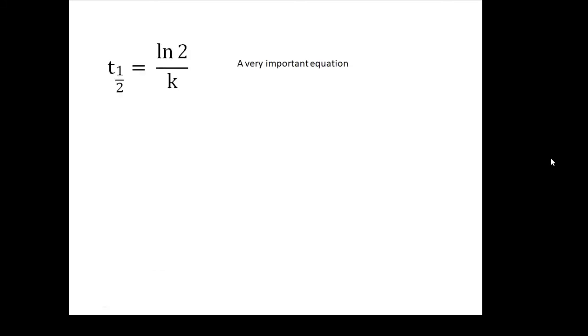I'm not going to prove this equation. It's not that hard to prove if you're doing A-level maths. But it's t half equals log 2, natural log of 2, over k. t half equals log 2 over k. So if you know the decay constant, you can work out the half-life and vice versa.